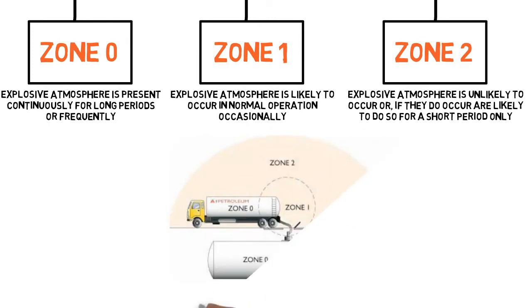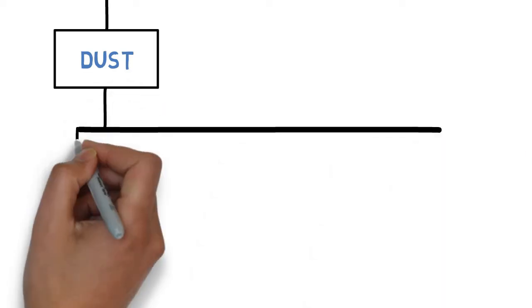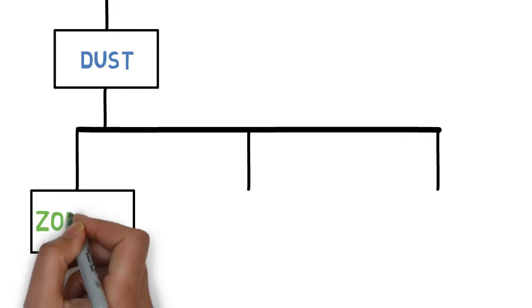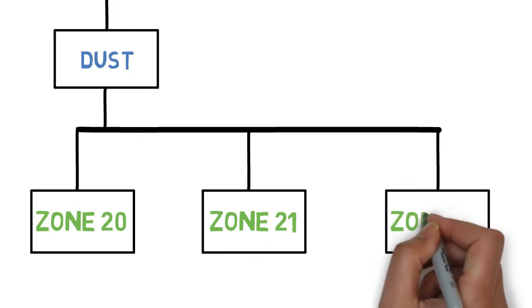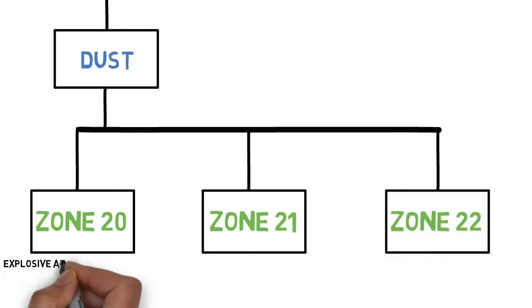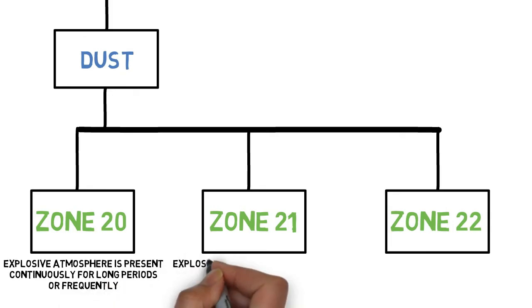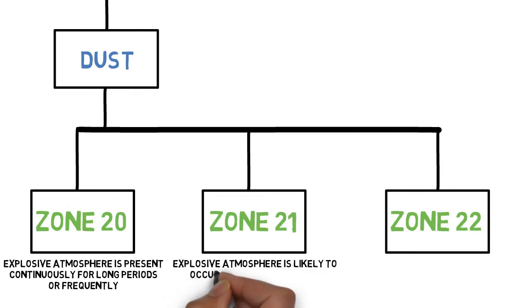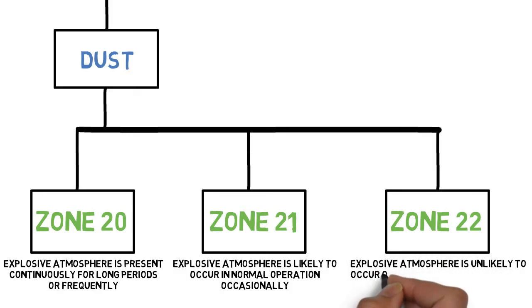From the image you can understand the zones. Similarly, dusts are classified into three different zones: Zone 20, Zone 21, and Zone 22. In Zone 20, Explosive Atmosphere is present continuously for long periods, or frequently. In Zone 21, Explosive Atmosphere is likely to occur in normal operation occasionally. In Zone 22, Explosive Atmosphere is unlikely to occur, or if they do occur, are likely to do so for a short period only.